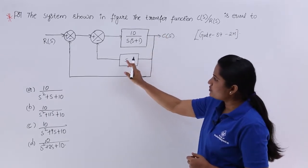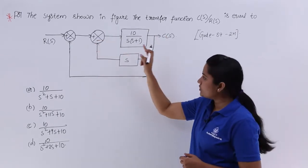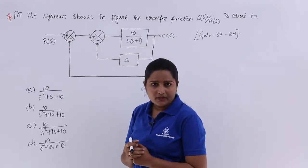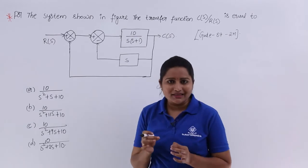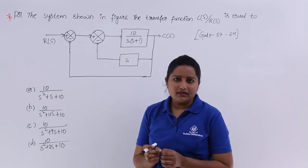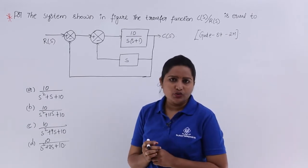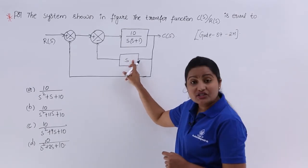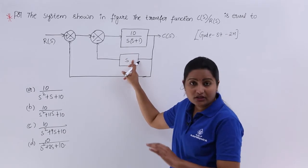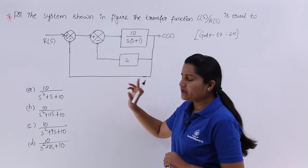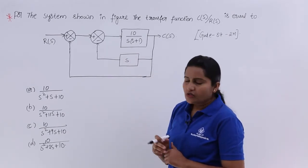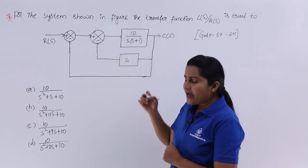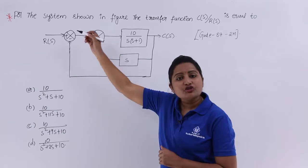We can observe two feedbacks in the diagram. One is a regular feedback and another is a unity feedback. Unity feedback means the feedback loop gain is equal to 1. Here H is equivalent to S for the first loop, so that is not unity feedback. The second loop is unity feedback. So we have one negative feedback and another negative unity feedback.